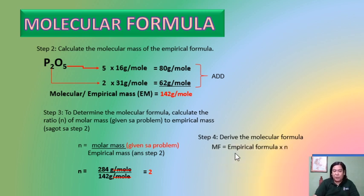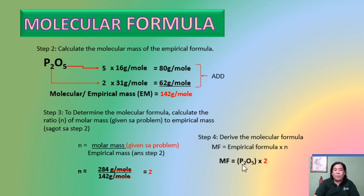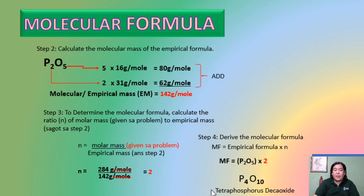For step 4, derive the molecular formula. The molecular formula equals the empirical formula P2O5 multiplied by n. Multiply n into the subscripts: for phosphorus, 2 × 2 = 4, giving P4; for oxygen, 5 × 2 = 10, giving O10. The molecular formula is P4O10, or tetraphosphorus decaoxide.